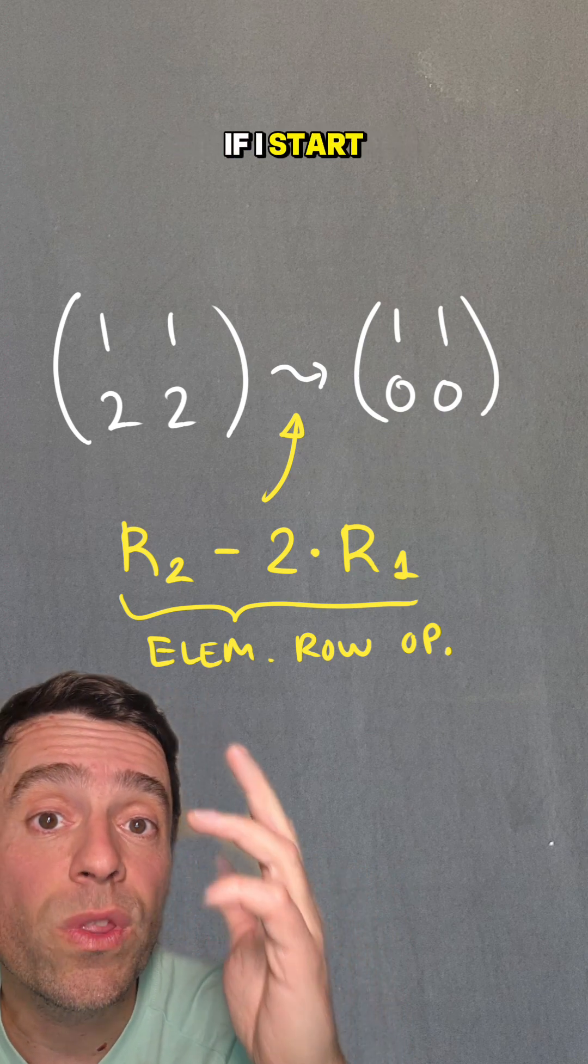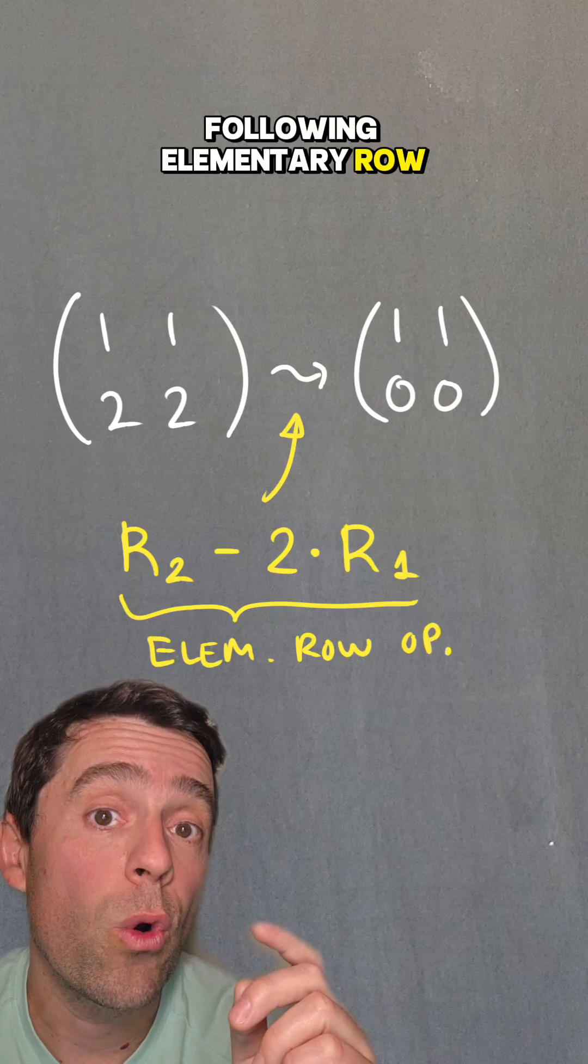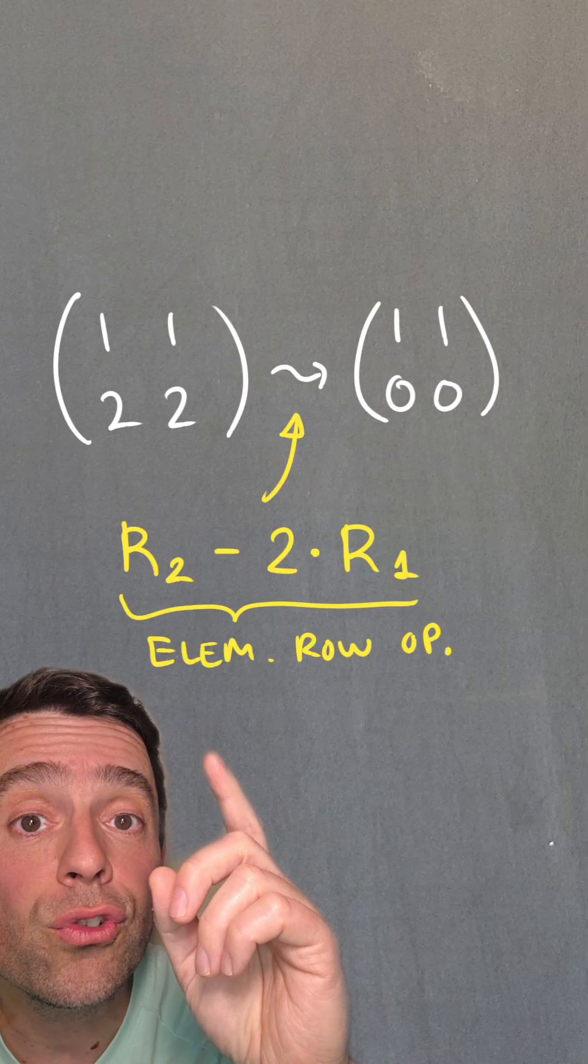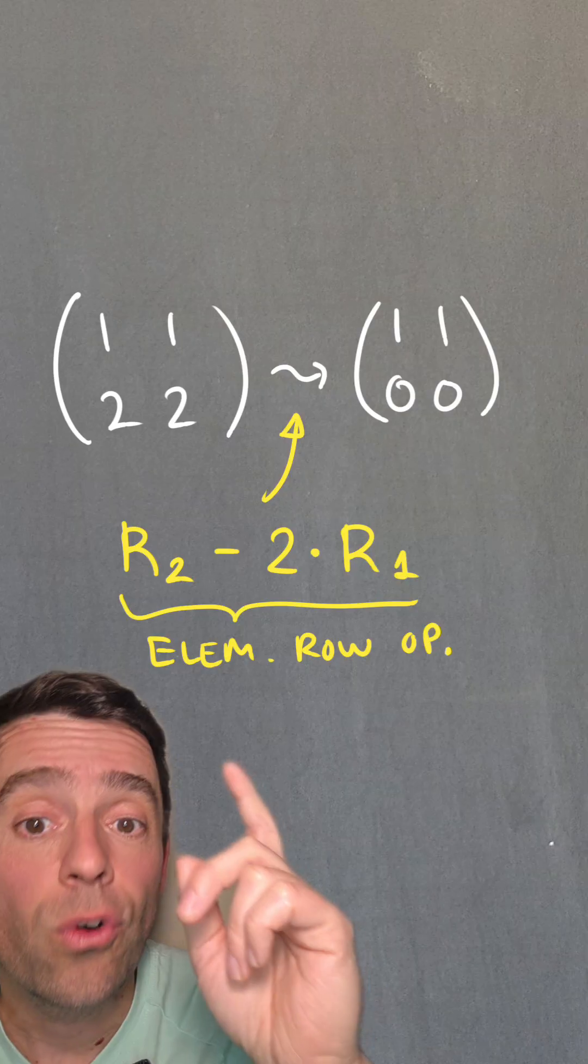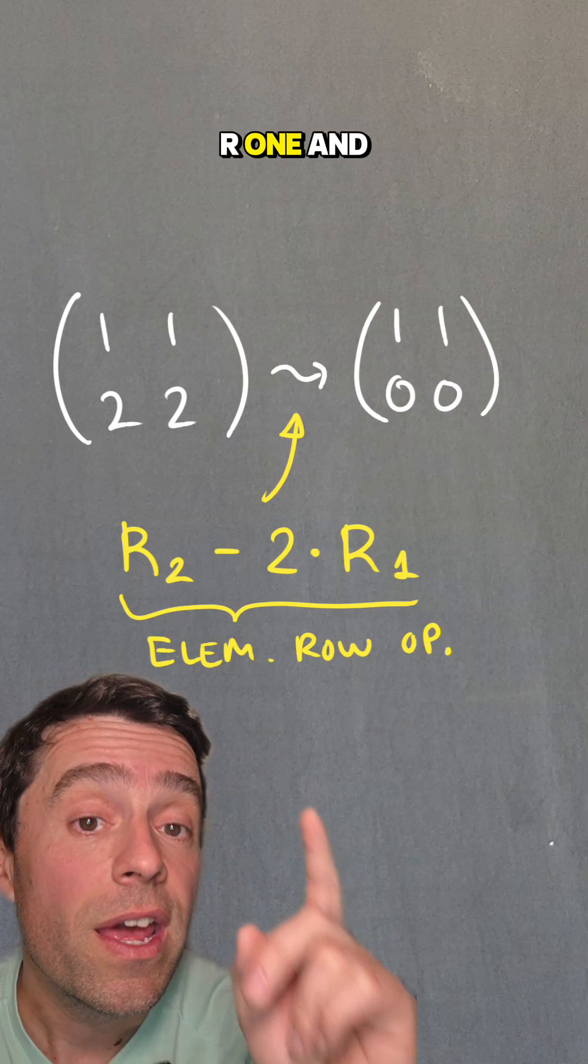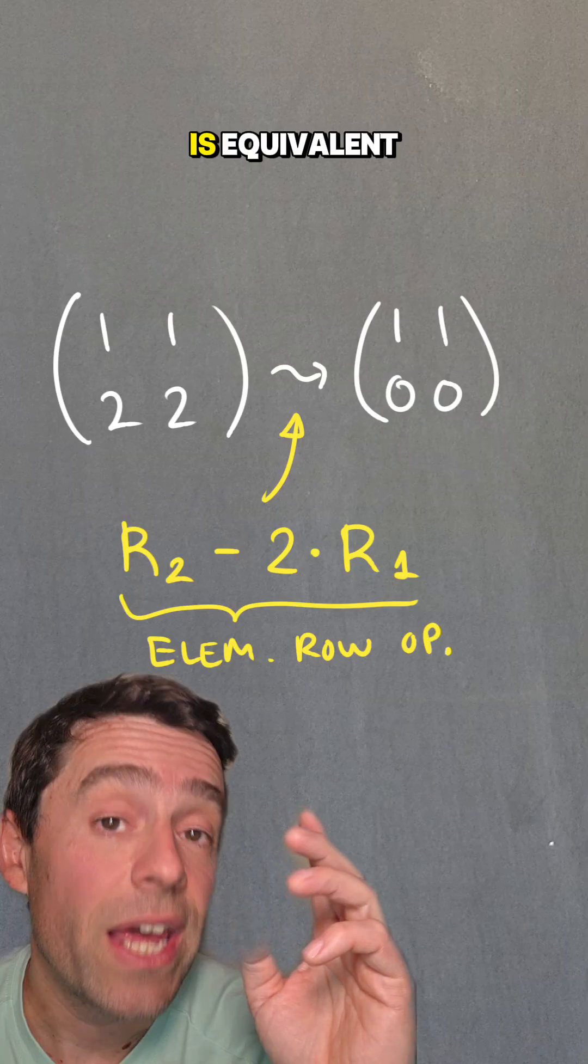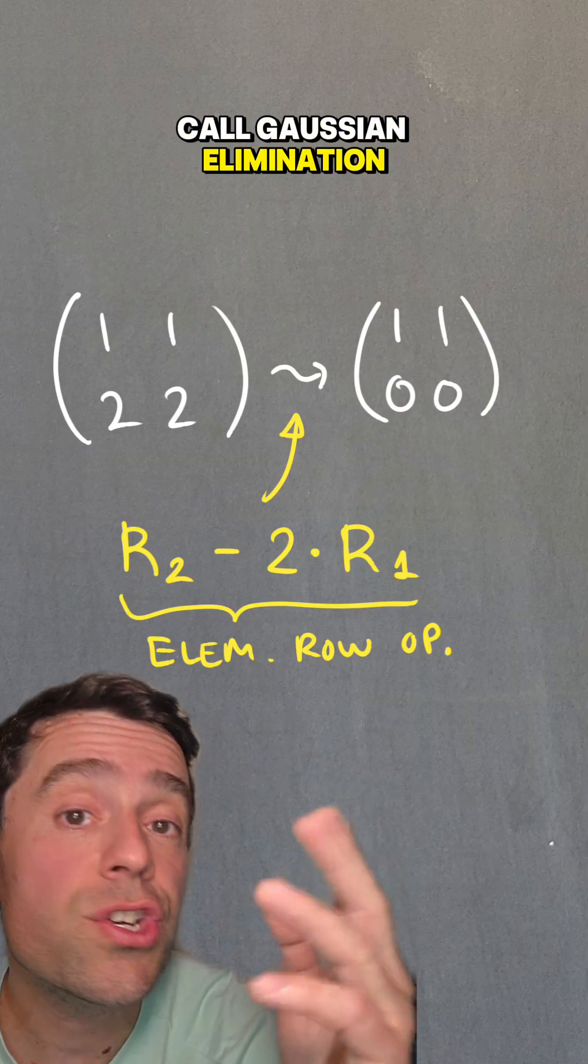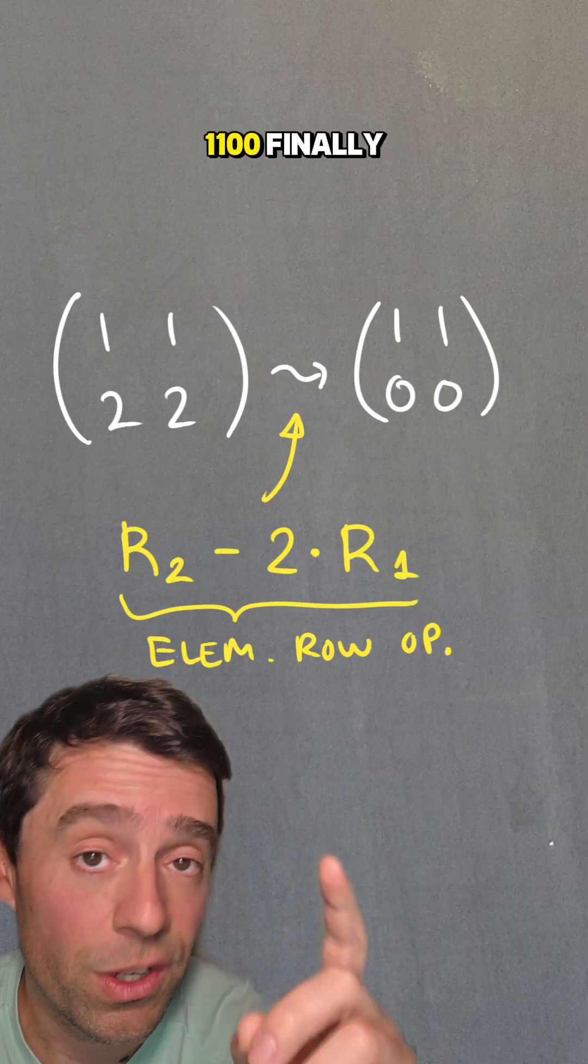So for example, if I start with [[1,1],[2,2]], then I can do the following elementary row operation. I can replace r2 by r2 minus twice the first row, so r2 minus 2r1. And that gives me that the matrix I started from is equivalent through what we call Gaussian elimination or row reduction to the matrix [[1,1],[0,0]].